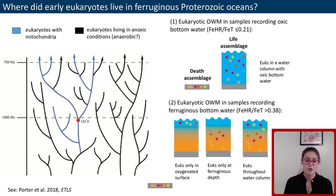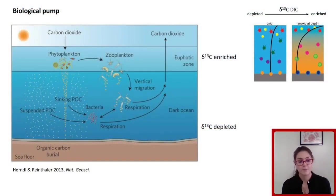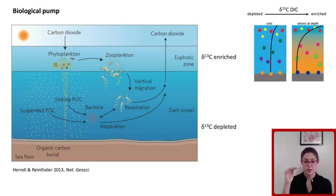There are a few scenarios we should consider. Eukaryotes could have inhabited a water column with oxic or anoxic bottom water. In life, they could have lived only at the surface, at depth, or everywhere. One approach that can tell us more is to explore what carbon pools influence our fossils. For example, environments with a carbon isotope gradient — cases with an active biological pump, phytoplankton producing at the surface, or anoxia at depth with less mixing — would lead to different isotopic signals in different parts of the water column.